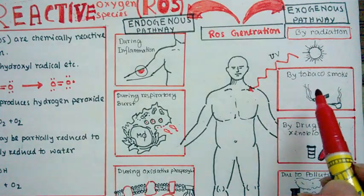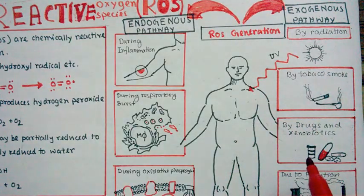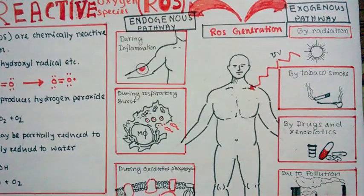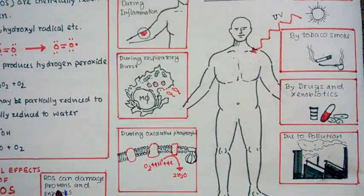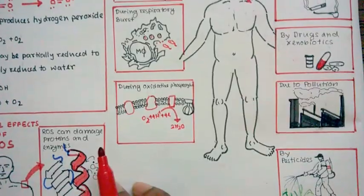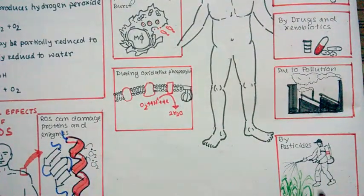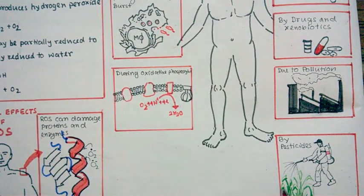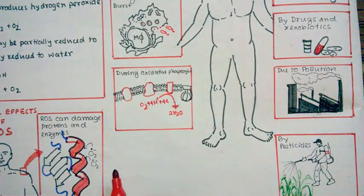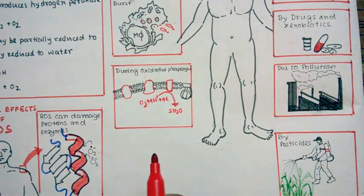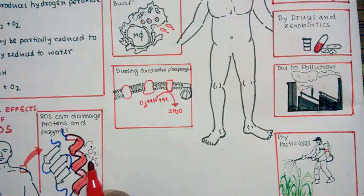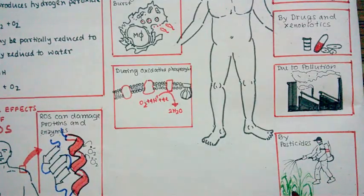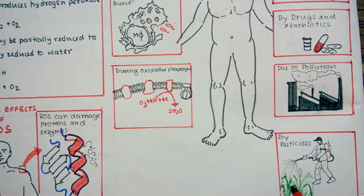UV radiation particularly has a lot of harmful effects on our body, and we would discuss it later. Apart from UV radiation, tobacco smoke, drugs, and xenobiotics, and due to pollution, ROS could be also generated. Not only pollution, but by application of pesticides and consuming food and vegetables affected by pesticides, ROS could be generated in our body. One such example is rotenone, which is actually a component of pesticide but could generate ROS when rotenone-treated plants are consumed.